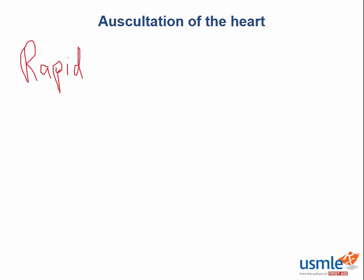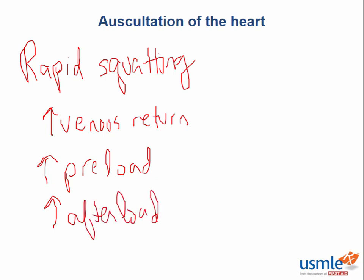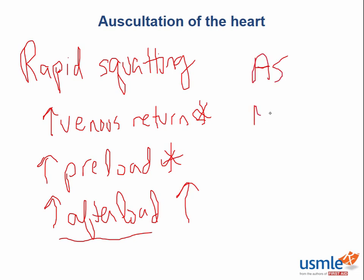Rapid squatting has a similar mechanism to inspiration in that it increases venous return, increases preload, and also increases afterload. When a patient squats down and activates their lower extremity muscles, blood is shunted from the veins of the lower extremities up through the inferior vena cava into the right atrium, increasing venous return and preload. Additionally, activating the lower extremity muscles compresses the arteries there, resulting in increased afterload on the heart. This results in an increase in intensity of aortic stenosis, mitral regurgitation, and ventricular septal defect murmurs.